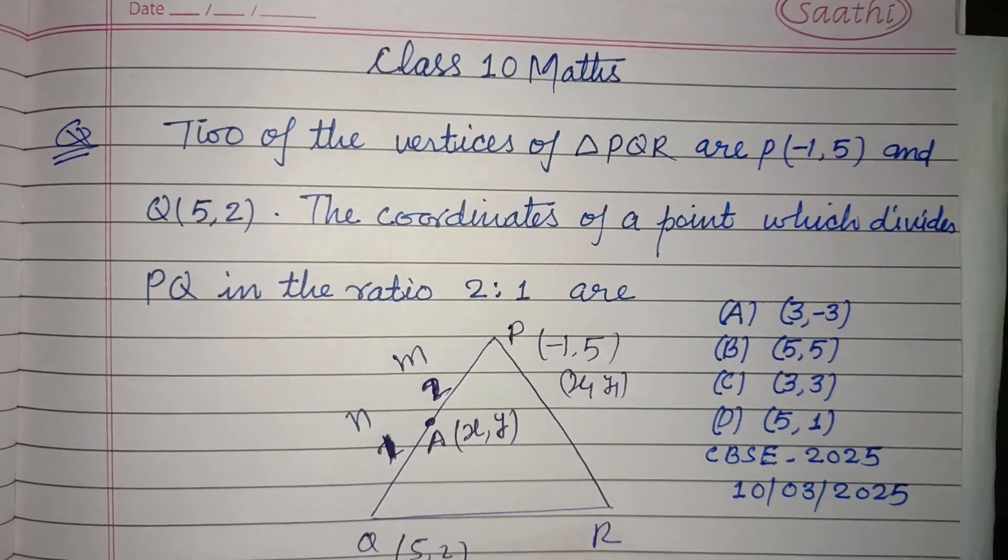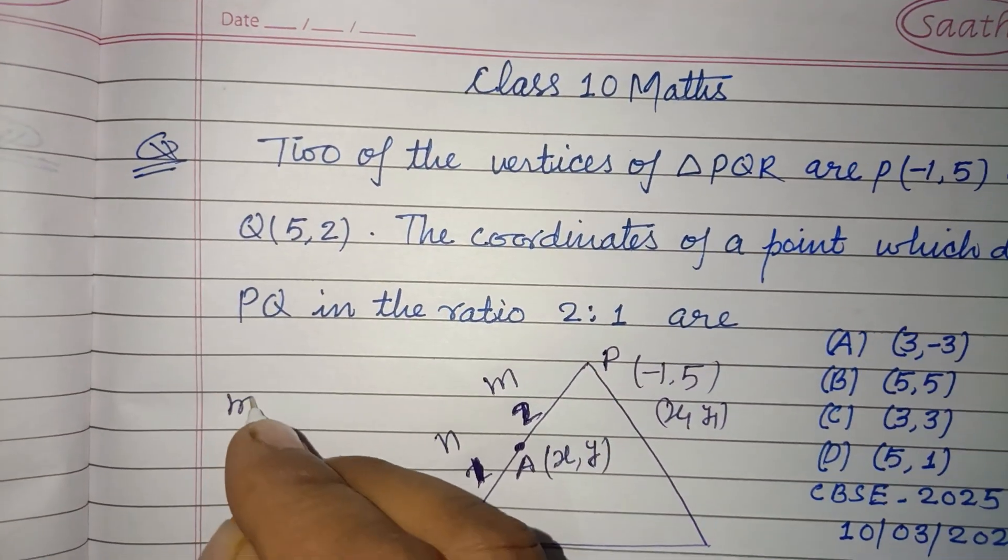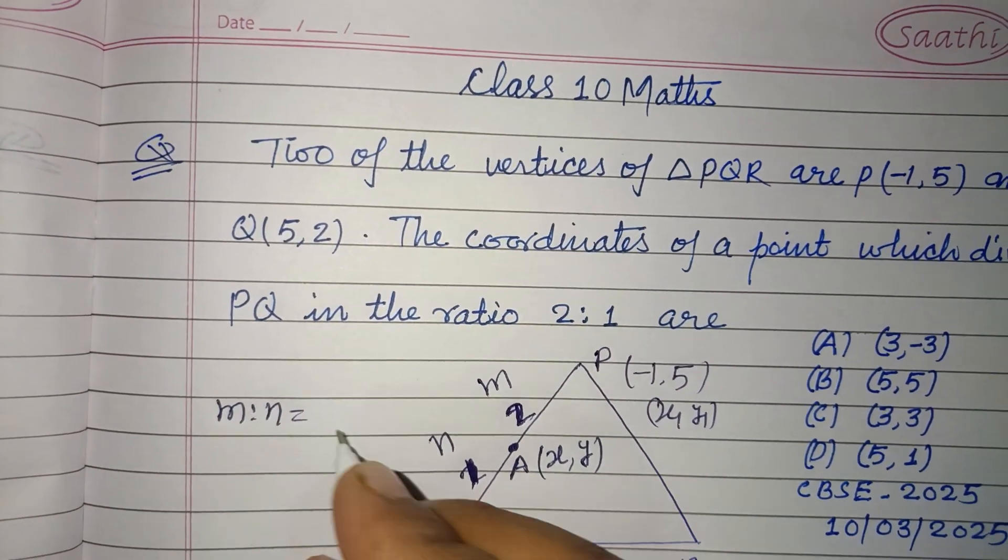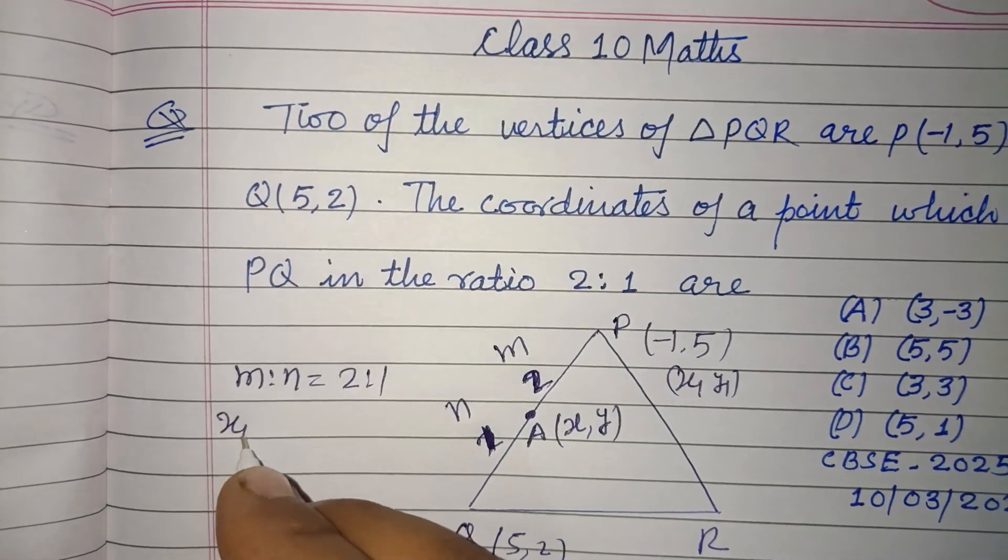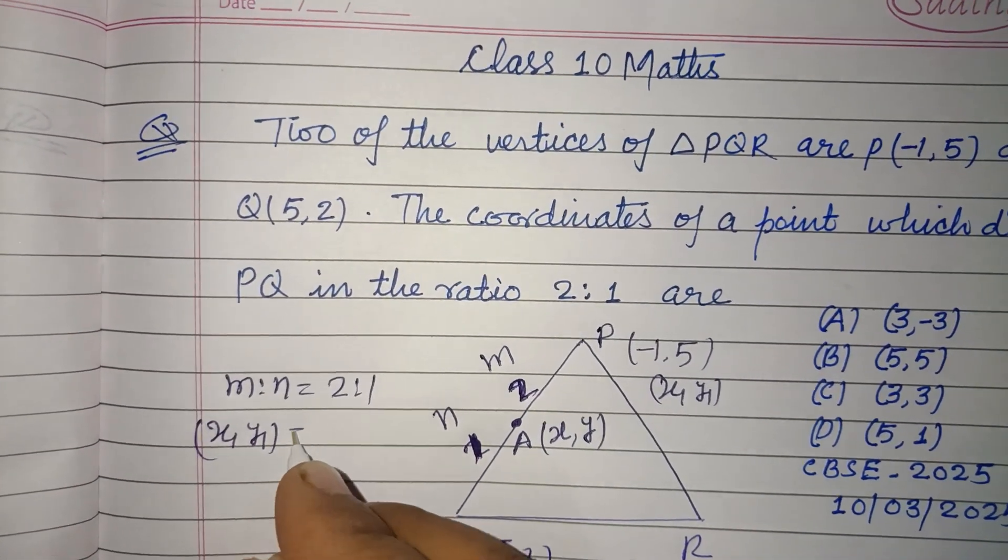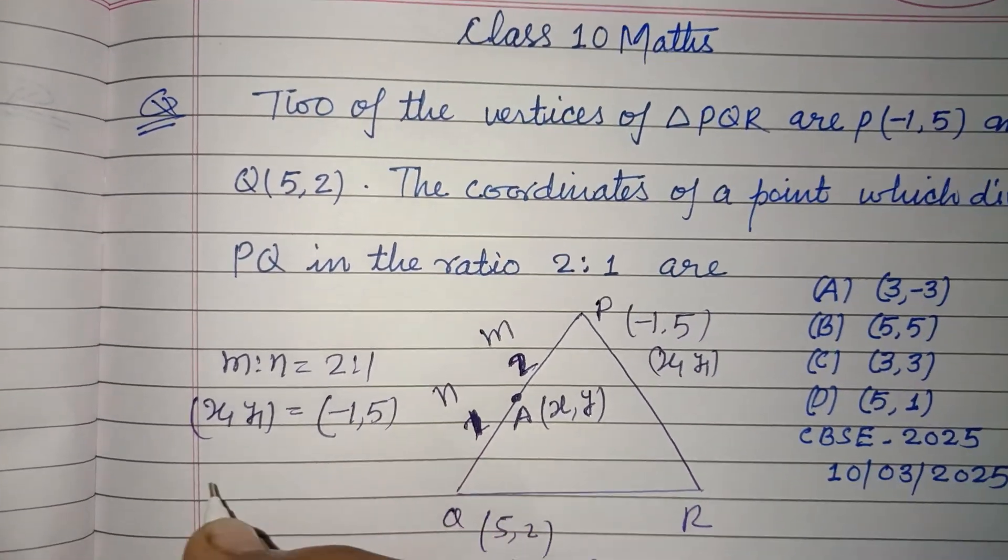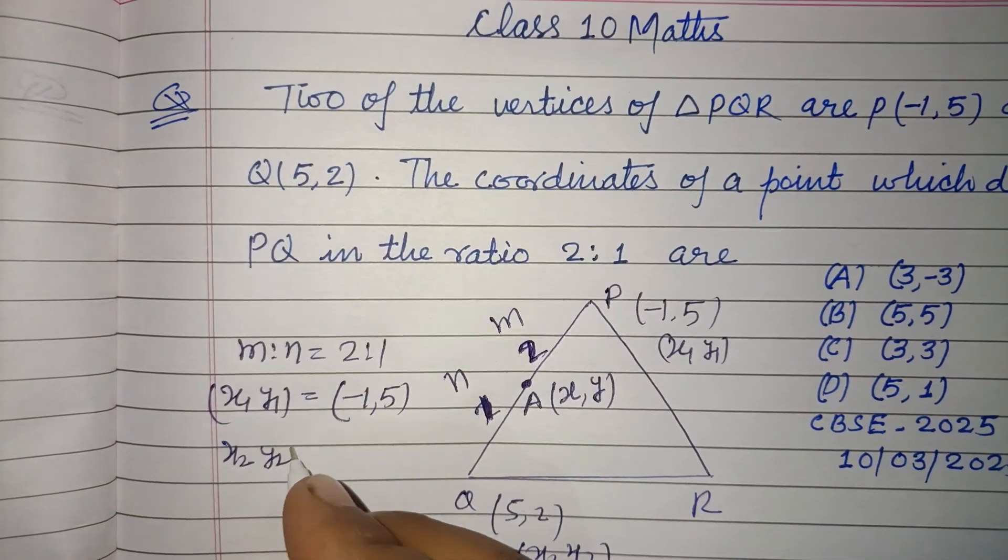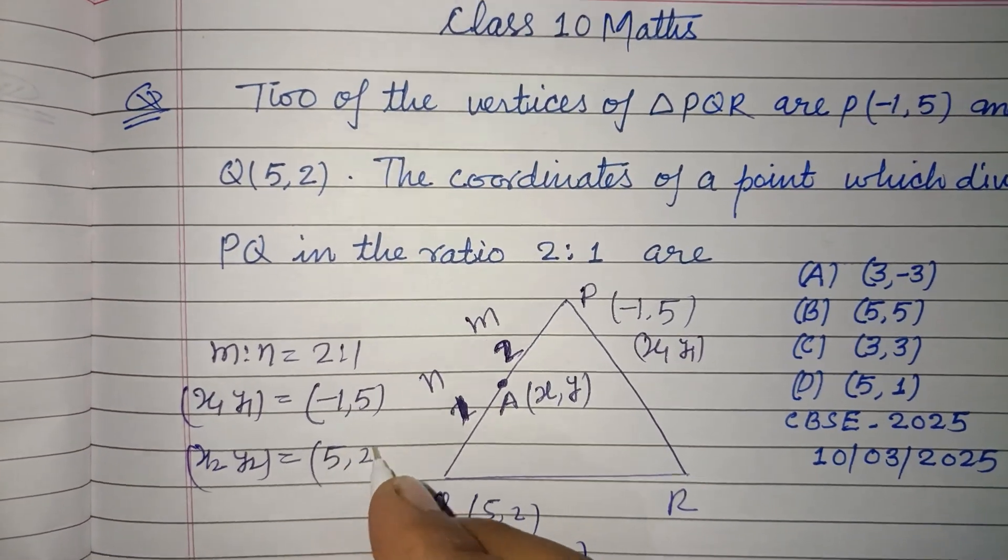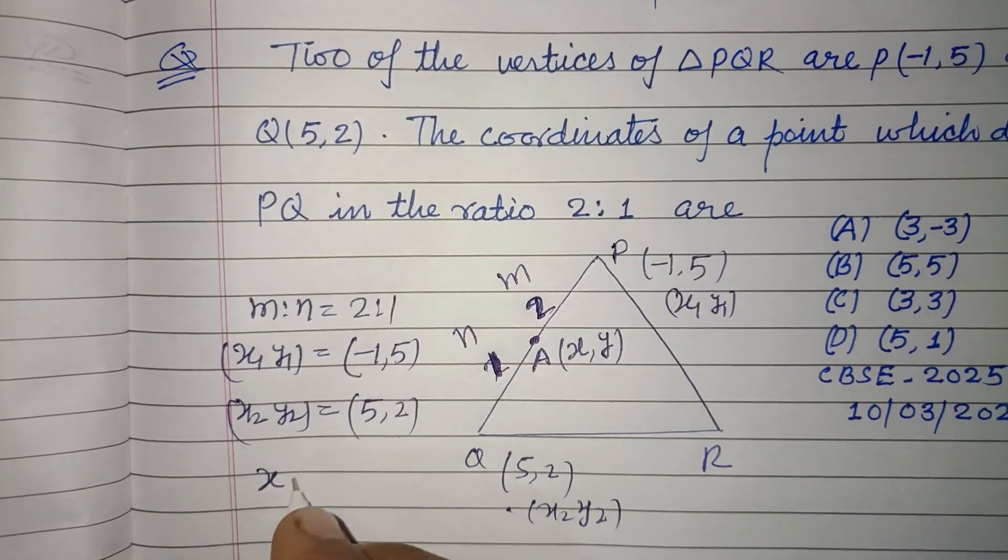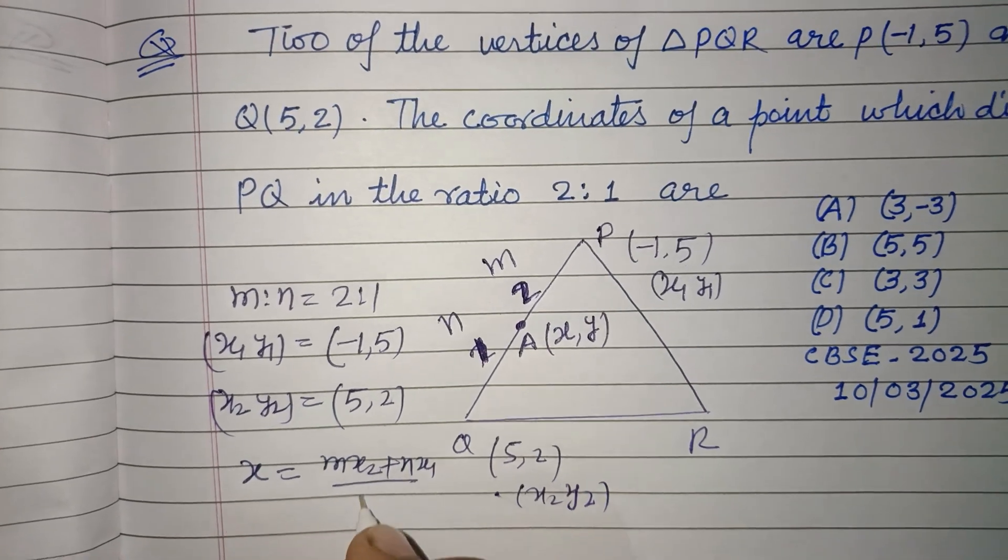And this is X2,Y2. So first we write M:N is 2:1. X1,Y1 are (-1,5). X2,Y2 are (5,2). Now X equals (MX2 + NX1)/(M+N).